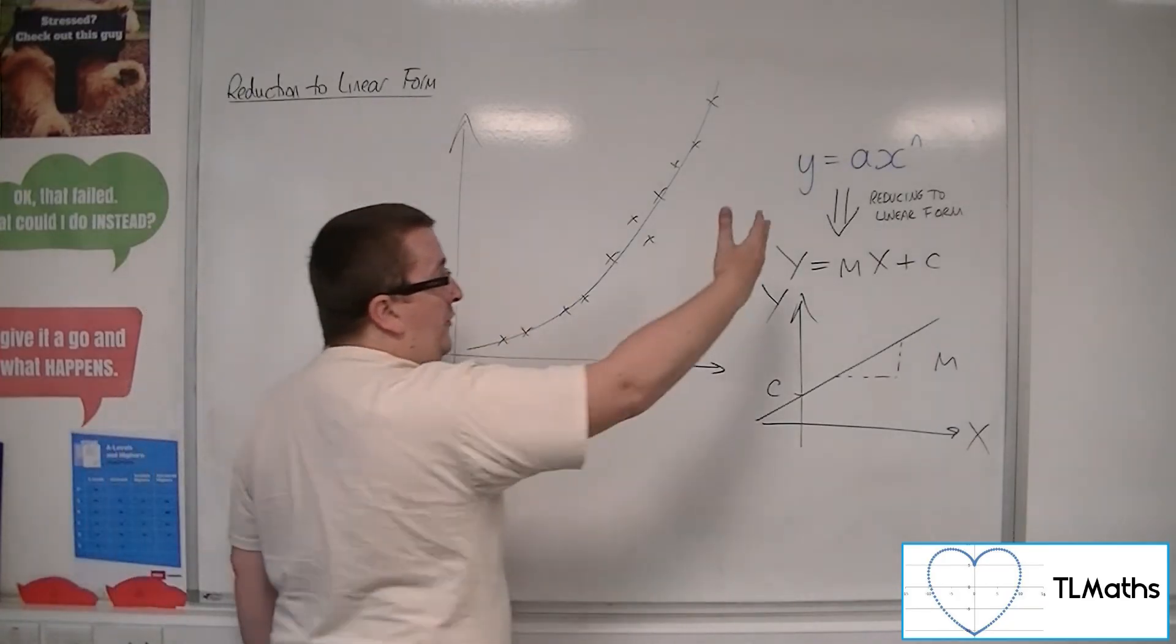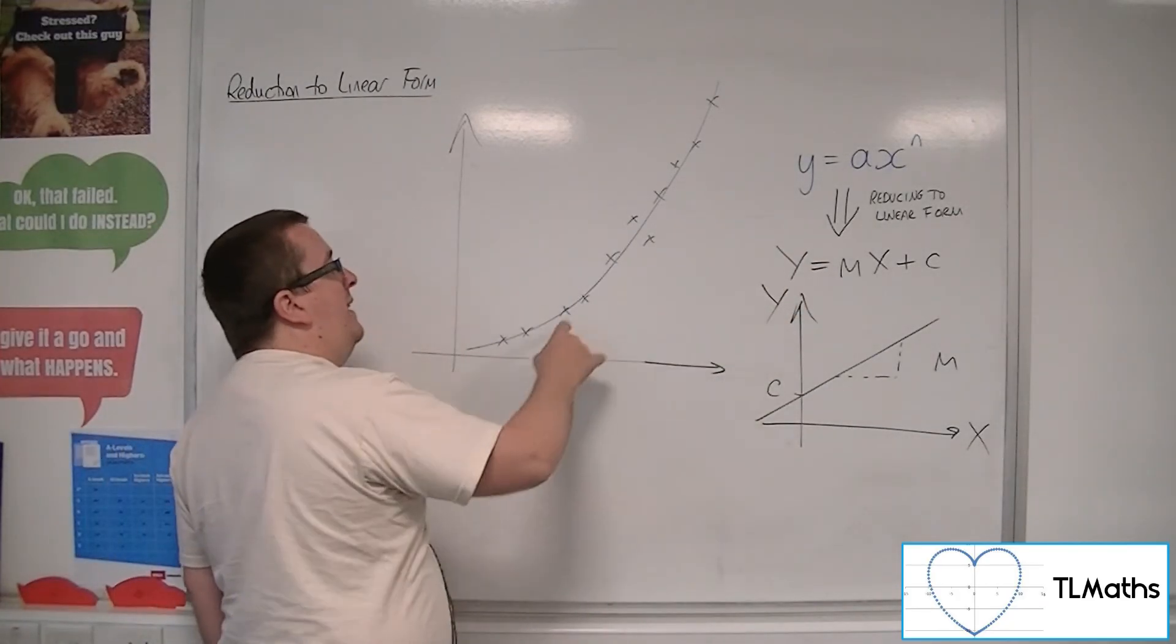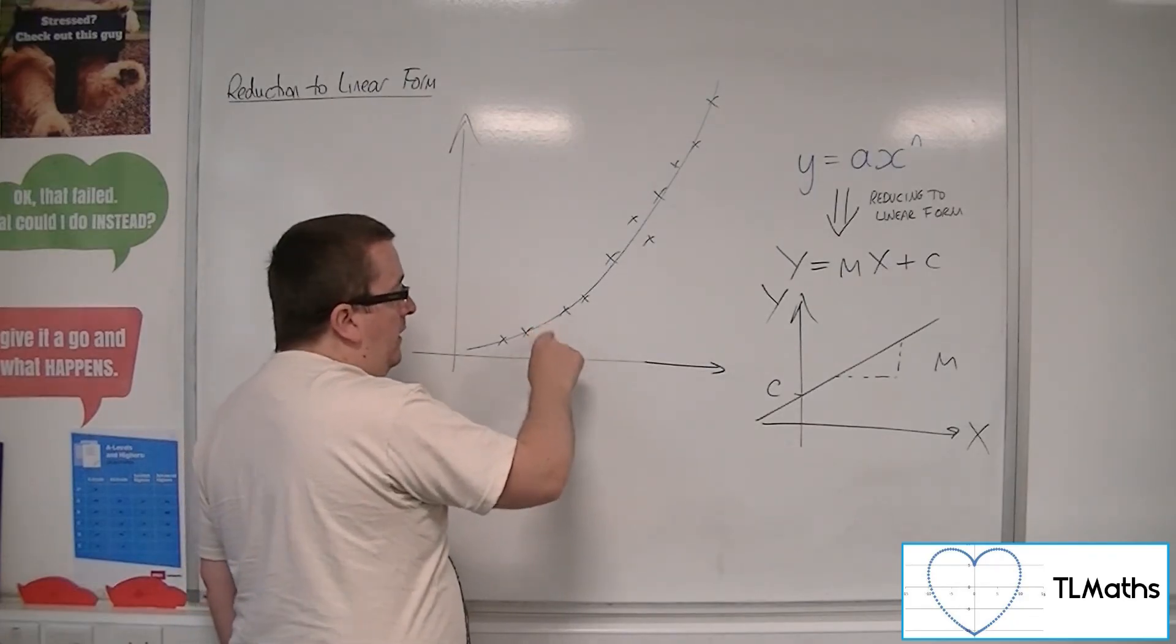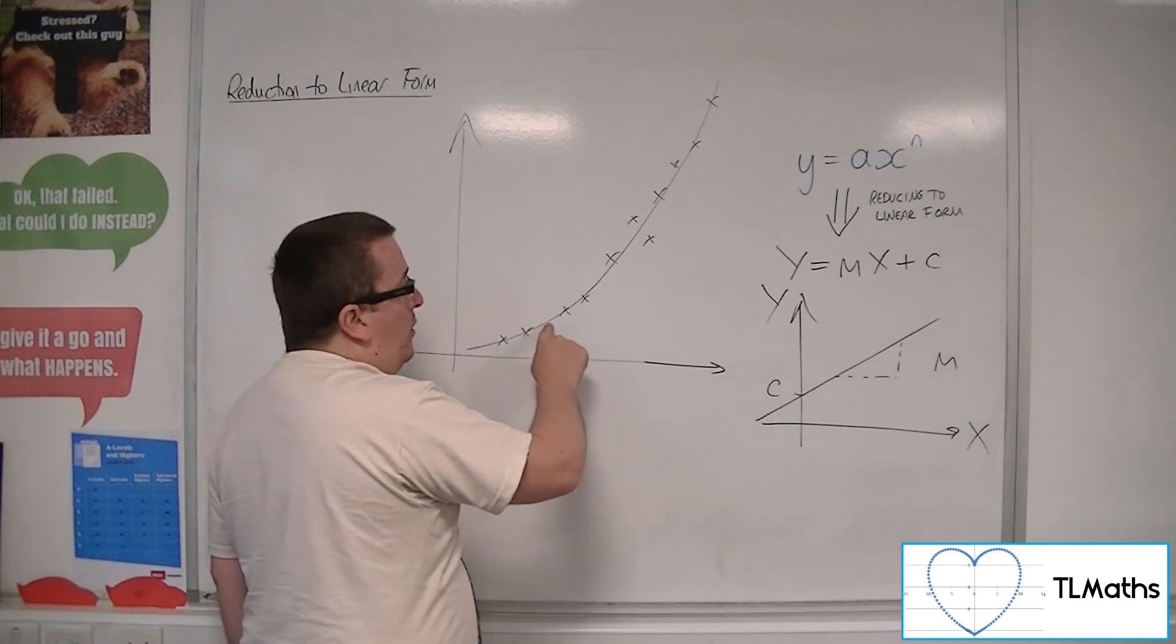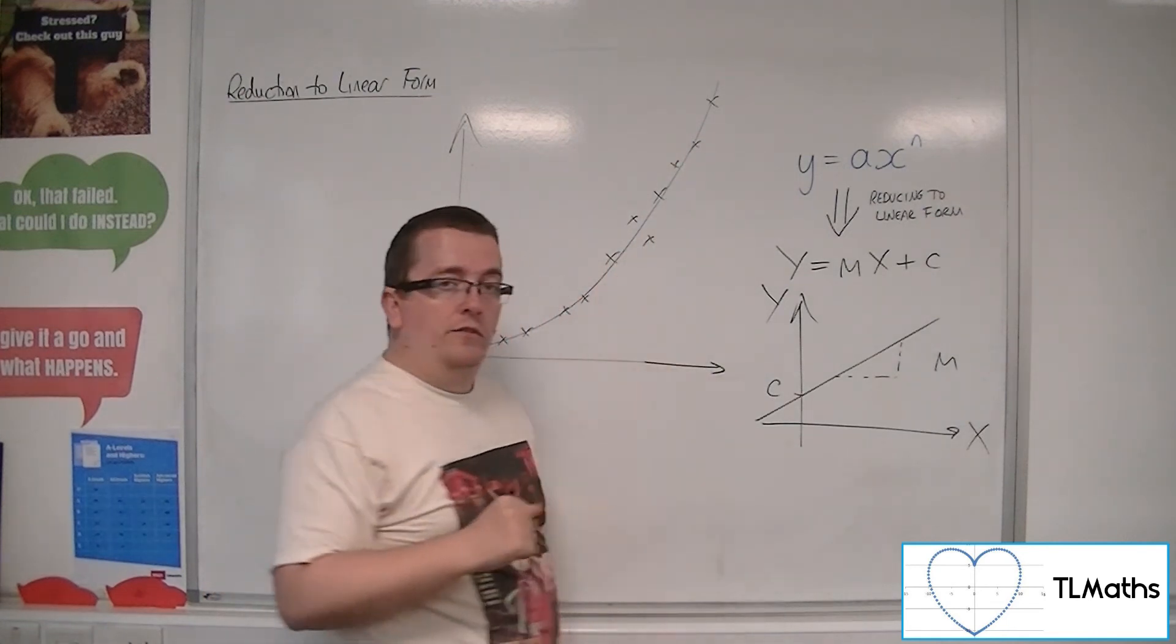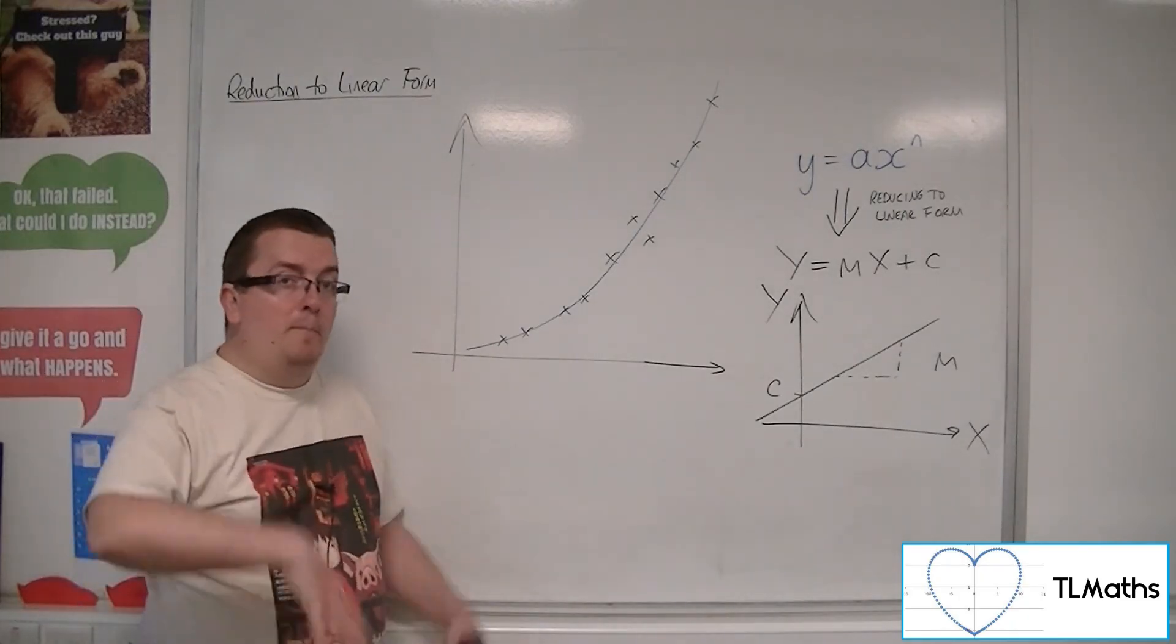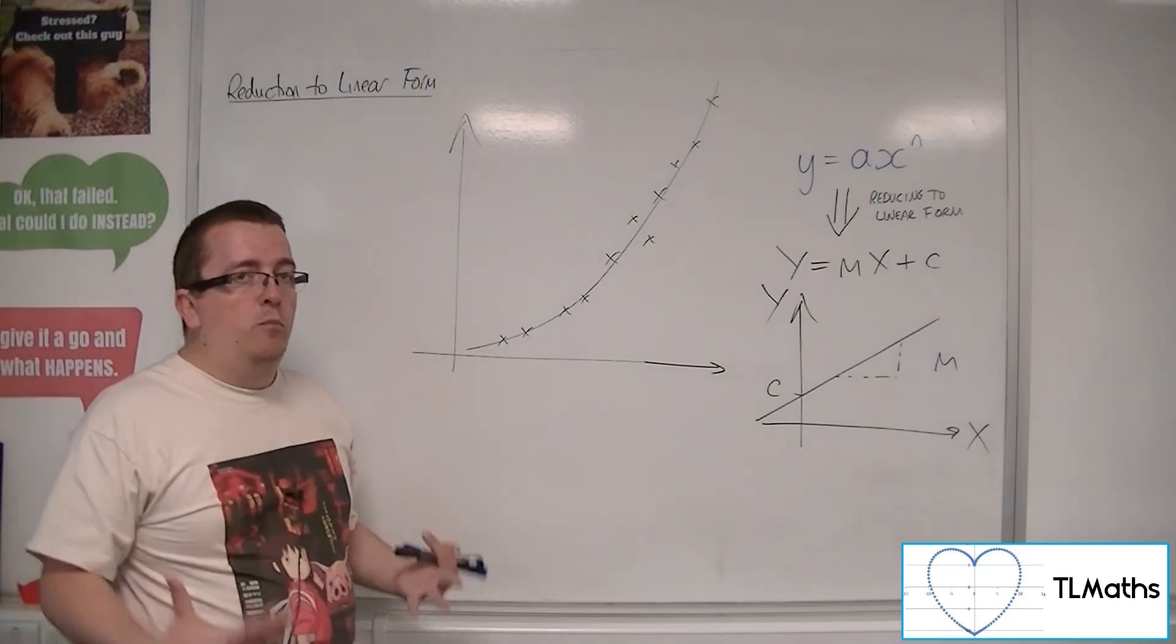And from that, because I've now got an equation, I can then say, what would the value of y be when x is this? I'd be able to find that point, or that point, or that point on the curve, and I could use it for predictions if I needed to.